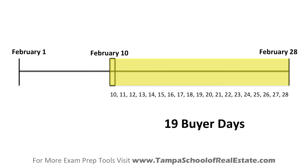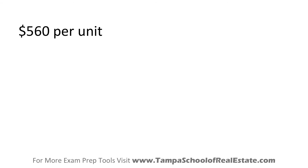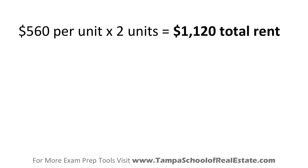Our next step is to calculate the total rent collected for the month. An important fact to note is that the property in this problem is a duplex — that's why it's important to carefully read the question, because many testers often overlook the key information in the first few words of the question. Since the rent is given as $560 per unit we must multiply the per unit rent by 2 since the duplex has 2 units. We'll take our $560 per unit rent and multiply it by 2 units to give us a total monthly rent of $1,120.